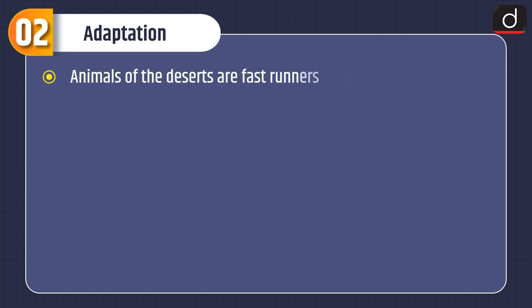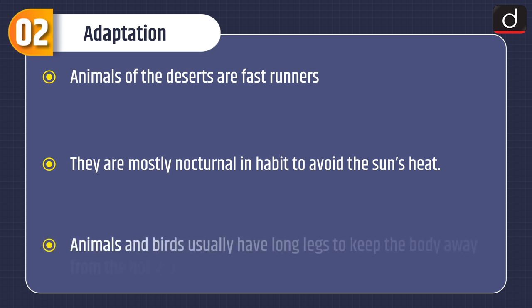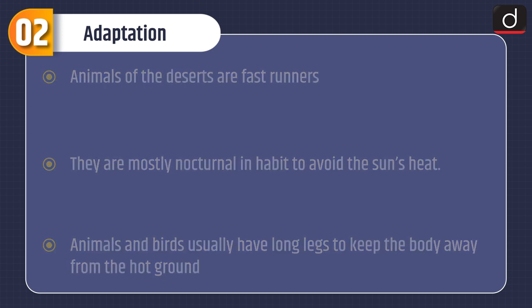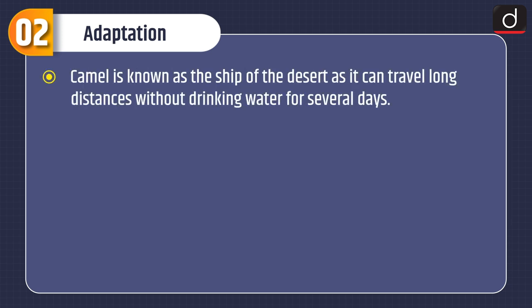Animals of the deserts are fast runners. They are mostly nocturnal in habit to avoid the sun's heat. Animals and birds usually have long legs to keep the body away from the hot ground. The camel is known as the ship of the desert as it can travel long distances without drinking water for several days.